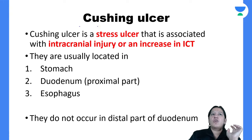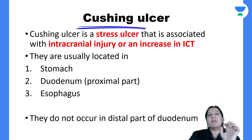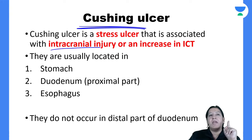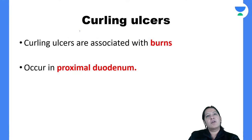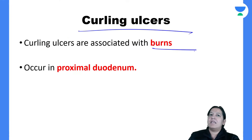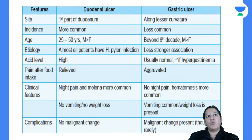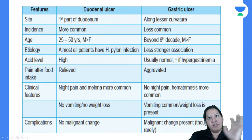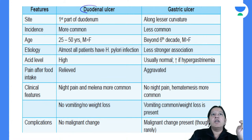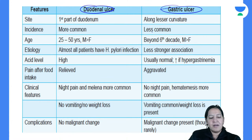Just to recap: Cushing ulcer is seen in intracranial lesions due to raised ICP causing vagal stimulation. Curling ulcer is seen in severe burns. Cushing and Curling — both start with C. Duodenal ulcer and gastric ulcer are the two main types. Done with the two types of ulcers.